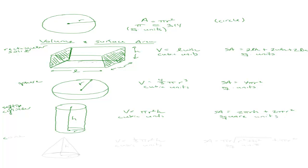Finally, let's talk about a cone, which looks like an upside-down funnel. The radius goes from the center of the base to the side, and the height goes from the top of the cone down to the base. The volume is one-third π r squared h, in cubic units. The surface area is π r times the square root of (r squared plus h squared), plus π r squared, in square units.